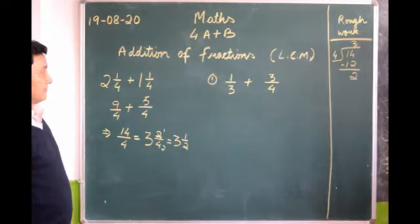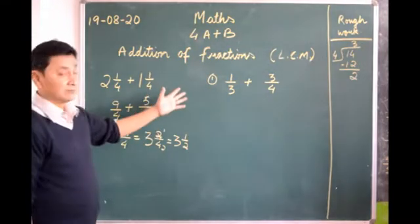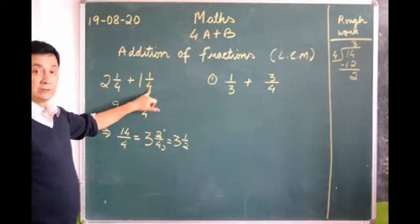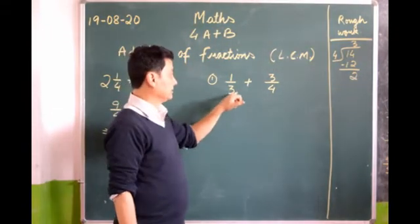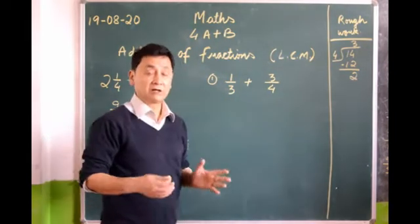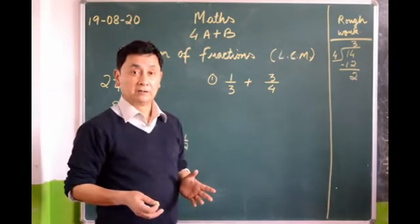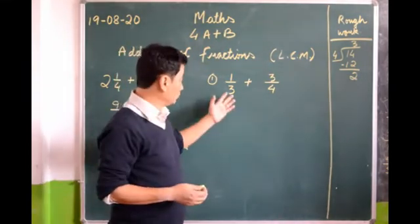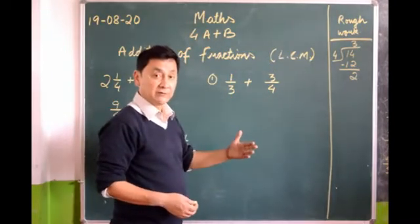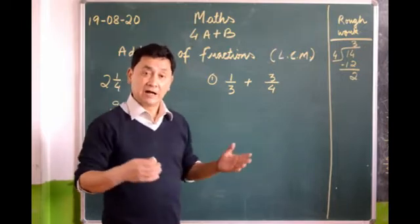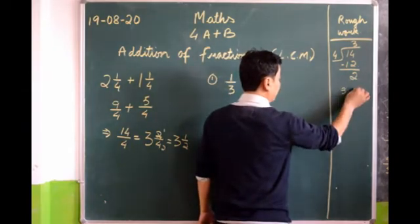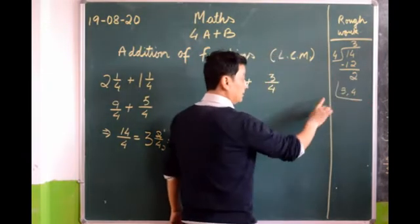Now you see another sum. It looks simple but we have to do a lot more than before. Here the denominators are different, and when we have to add fractions with different denominators we have to come to a common number. To do that we have to find the LCM of the denominators. So we find the LCM of 3 and 4.